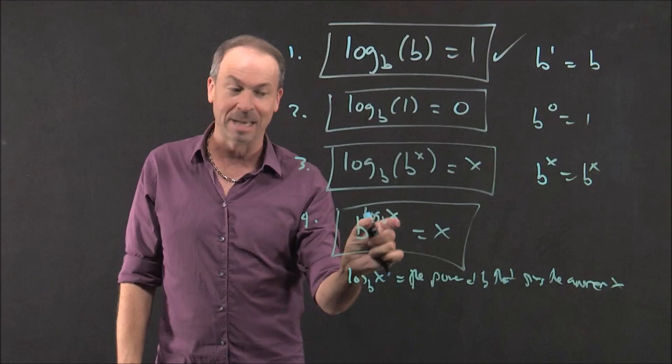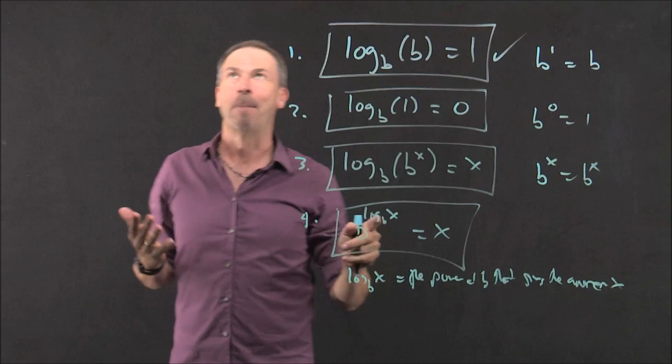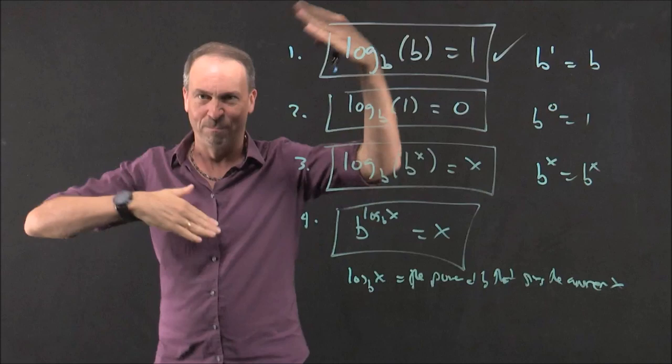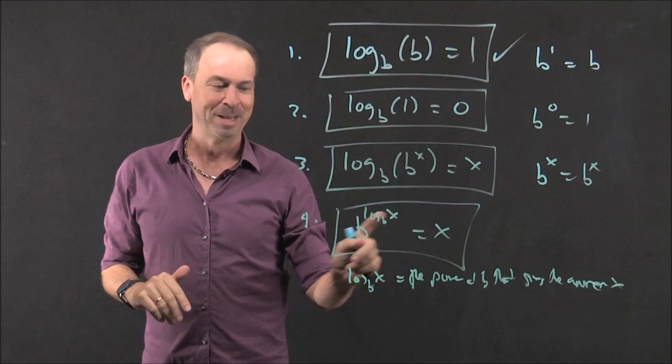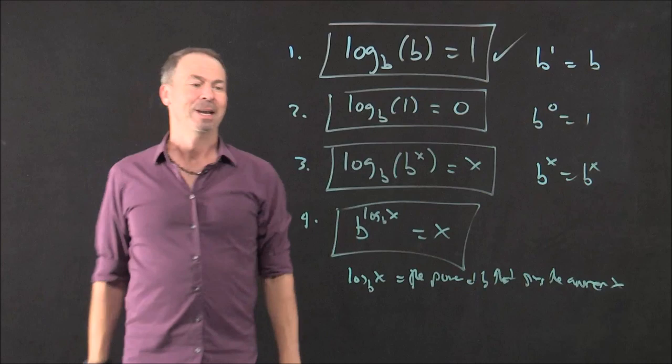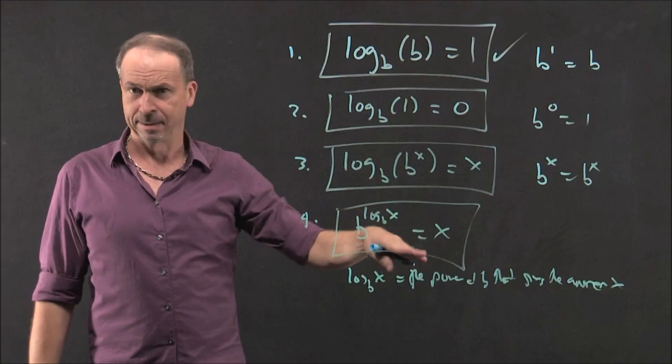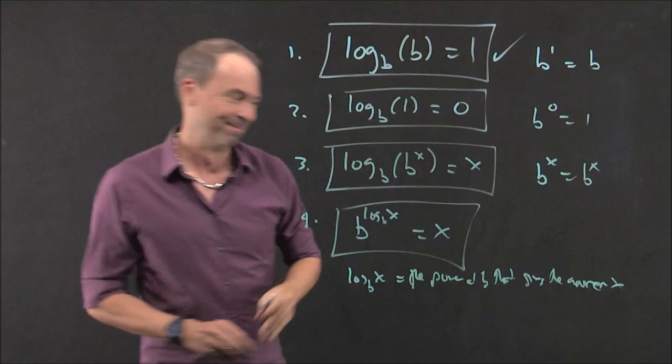Use the power of B that gives the answer X as a power of B, and you'll get the answer X. I know. It's like saying, who is Sally's daughter's mother? Well, it's back to being Sally again. So I'm like, you know, feeding information back in on itself becomes so sort of tight. It's hard to think your way through, but there it is. If I use the power of B that gives the answer X actually as a power of B, then I'll get the answer X. All right. So that's four very sort of what's called the easy trivial log rules. We have to think hard about them.